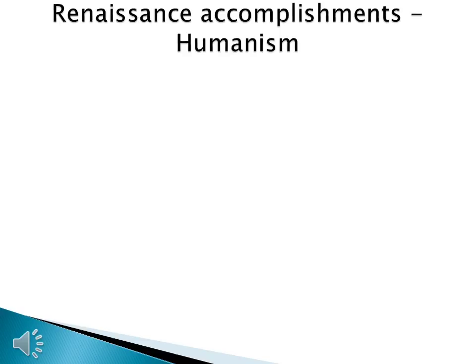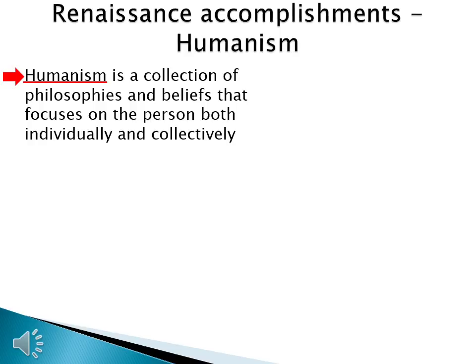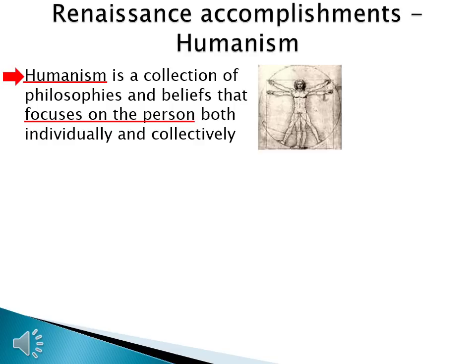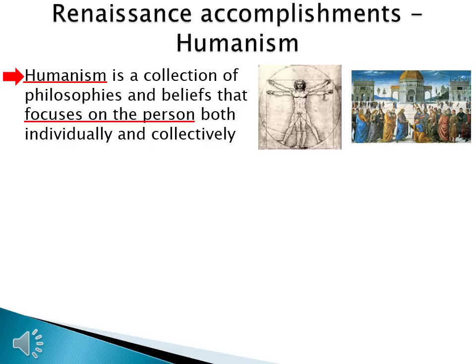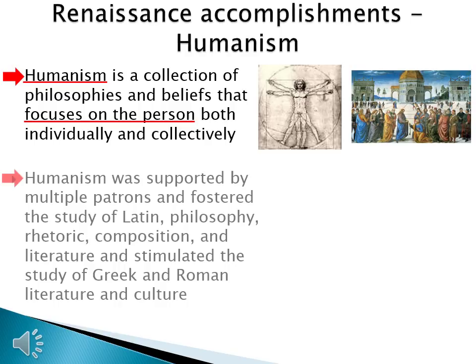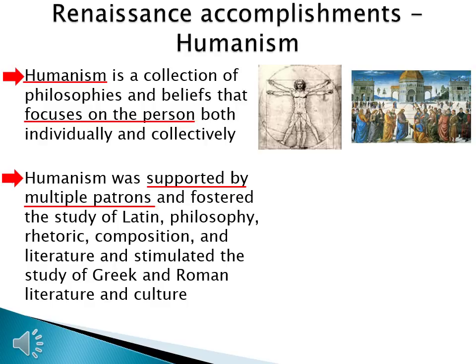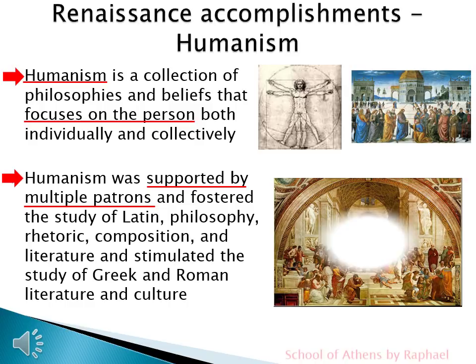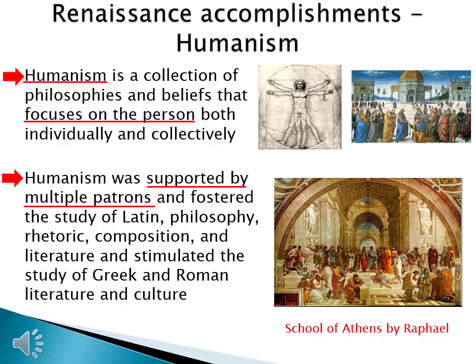As you've seen, individuals in the Renaissance are looking at the world from a different viewpoint or perspective — we call this viewpoint humanism. Humanism is a collection of philosophies and beliefs that focus on the person both individually, as we see in this picture from da Vinci, and collectively. No longer are we looking at Jesus as a figure on the cross surrounded by angels; now we're looking at Jesus in the human condition — that of dying — and in human form. Humanism was supported by multiple patrons, wealthy families in Italy, and it fostered the study of Latin, philosophy, rhetoric, composition, and literature, and stimulated the study of Greek and Roman culture. This picture is the School of Athens by Raphael — we don't focus on the school, we focus on all the people inside it. That's it for this lecture, and I look forward to seeing you in class.